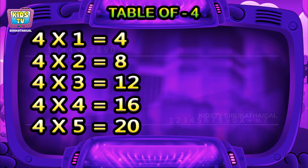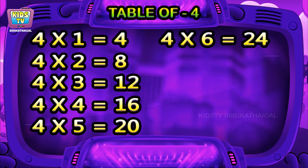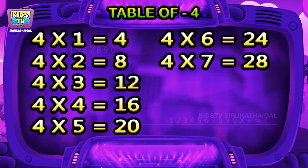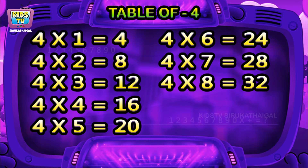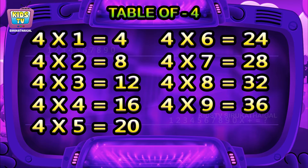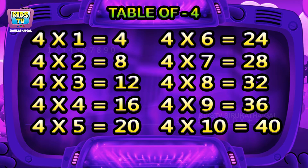Four fours are sixteen, four fives are twenty, four sixes are twenty-four, four sevens are twenty-eight, four eights are thirty-two, four nines are thirty-six, four tens are forty.